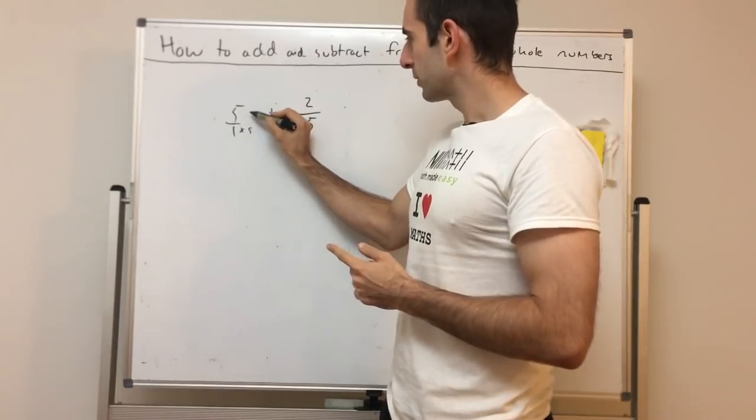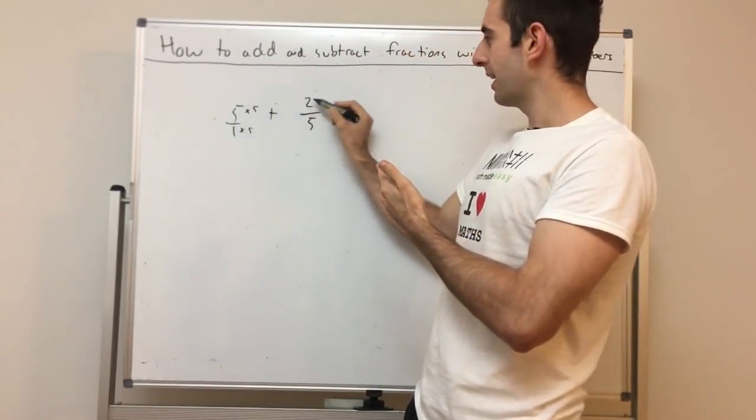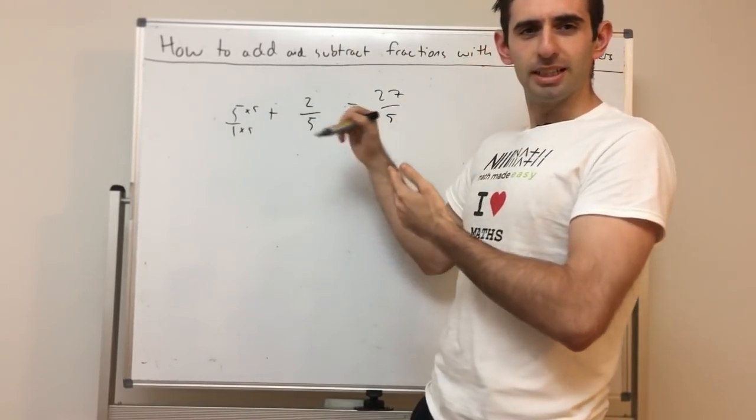Essentially, I'm times that by 5, which means I need to times that by 5. Then they have a common denominator and they add: 27 over 5. 25 plus 2 is 27.